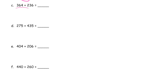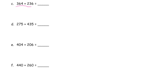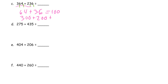And here I have 364 plus 236. You might notice the ones digits add up to 10, and the tens digits add up to 9 — that's going to end up making 100. So if you're good with your parts of 10, you might just see that 64 plus 36 equals 100. And then we add up our hundreds digits: 300 plus 200 plus this 100 equals 600.